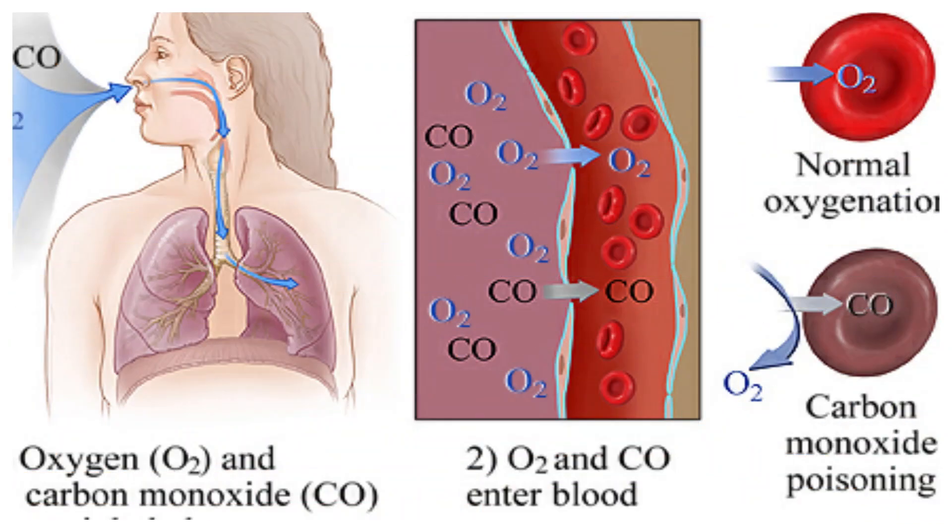Air pollution can also affect your cardiovascular system. Carbon monoxide binds to hemoglobin, modifying its conformation and reducing its capacity to transfer oxygen, which leads to many health problems. It can also have an impact on the nervous system, mainly affected by heavy metals and dioxins. Neurotoxicity with symptoms such as memory problems, sleep disorders, anger, and fatigue have been observed after arsenic, lead, and mercury exposure.